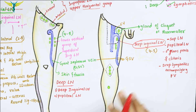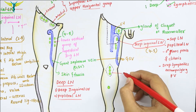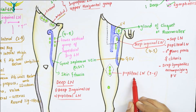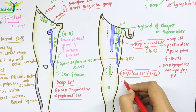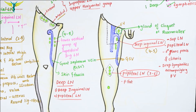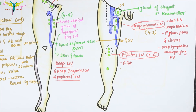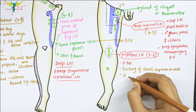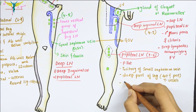Now let's talk about the second group of deep lymph nodes: the popliteal lymph nodes. These are 3 to 6 in number and, as the name indicates, they lie in the popliteal fossa. They are embedded in the popliteal pad of fat, near the termination of the small saphenous vein. The popliteal lymph nodes receive lymph from the territory of the small saphenous vein, from the deep part of the leg running from the anterior and posterior tibial vessels, and also the knee joint.